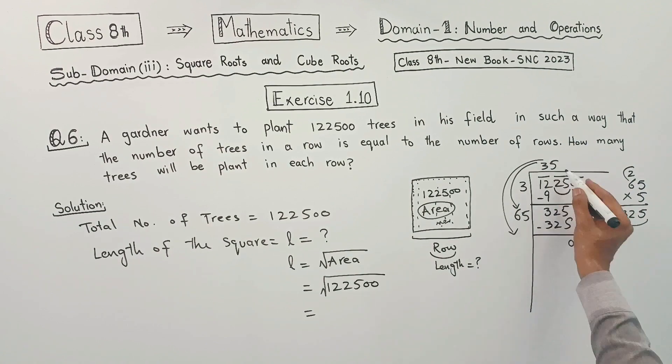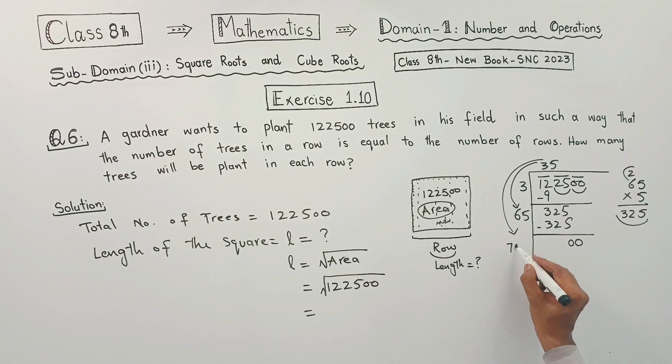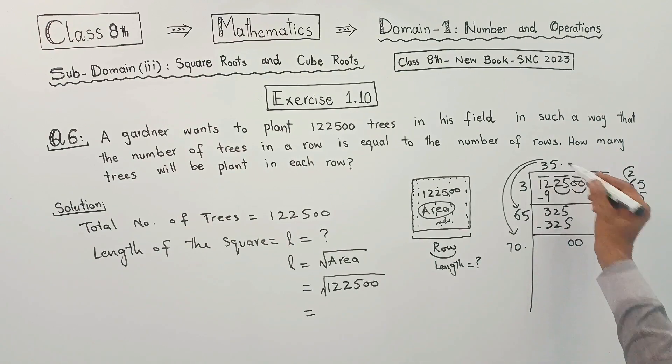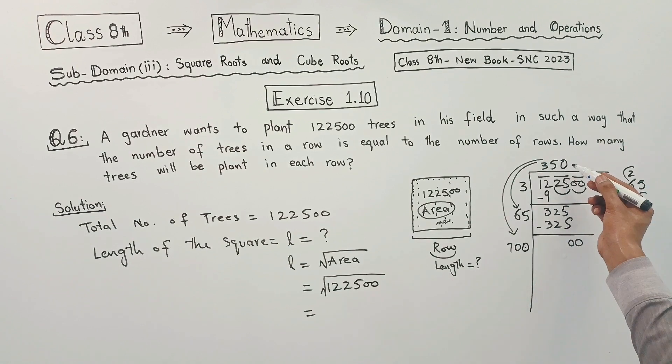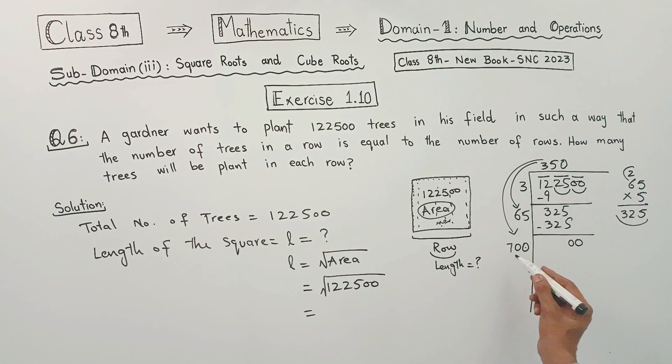After this, bring down the pair of zeros. Again, double it: 35 and 35 add to 70. And here, if there is no answer, definitely we have 0. Multiply, because if there is no answer, the answer is 0. So 700 times 0 is 0.